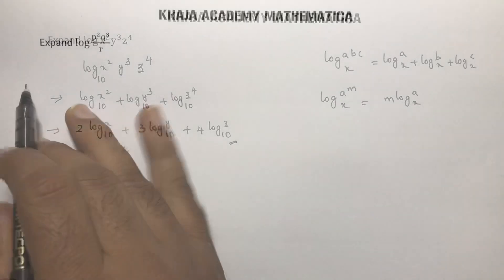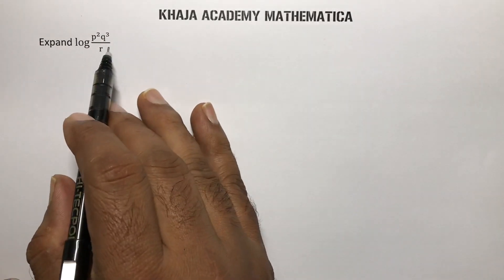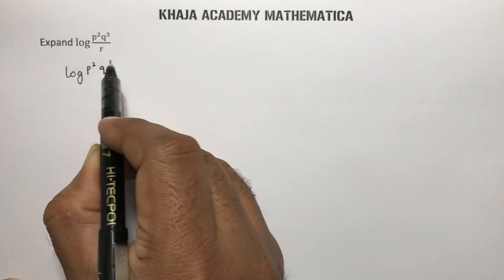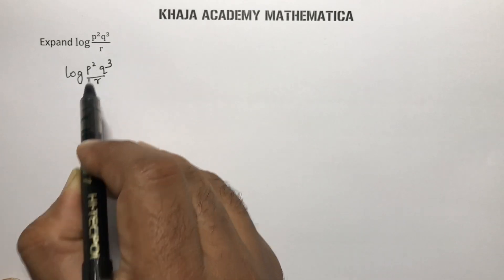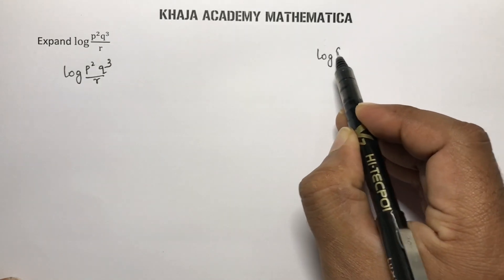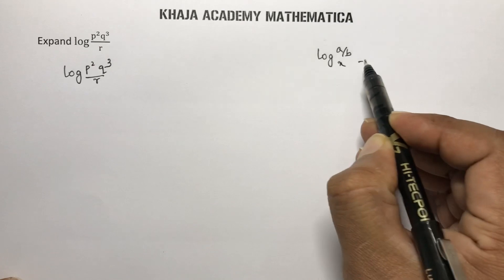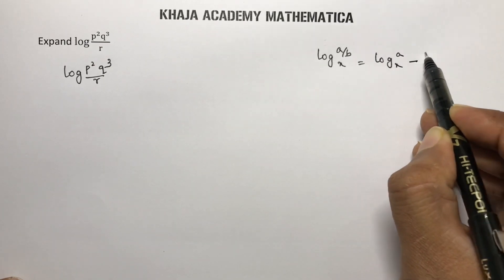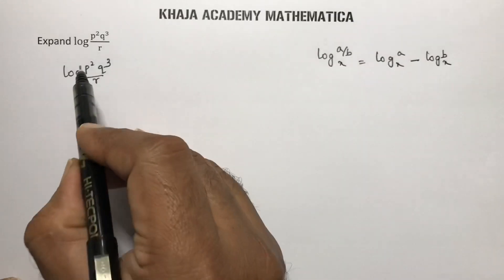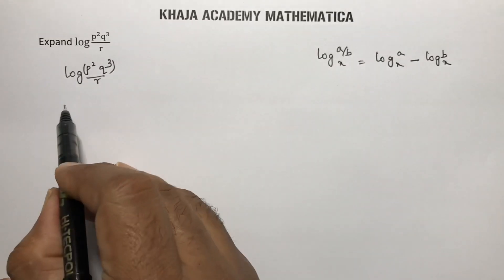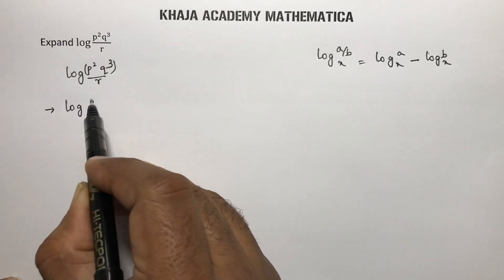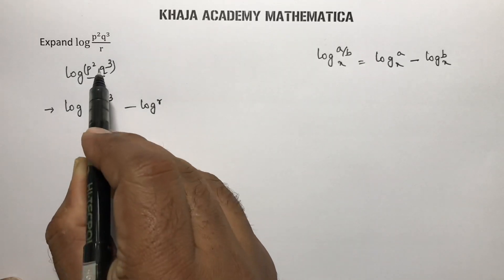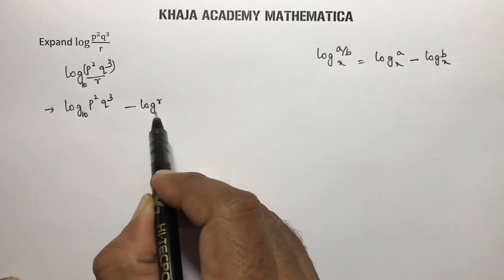Expand log p² q³ / r. First we use the logarithm of a quotient: log(a/b) to the base x is log a to the base x minus log b to the base x. We consider p² q³ together as the numerator and r as the denominator. So we write log p² q³ to the base 10 minus log r to the base 10.